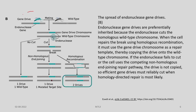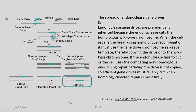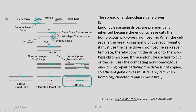Here we have a gene drive population with an endonuclease gene and the wild-type population. The gene drive chromosome and the wild-type chromosome are shown. The endonuclease acts on the wild-type chromosome partner and initiates cuts. As already discussed, it can either undergo homologous recombination or non-homologous end joining. In the case of homologous recombination, the drive is now present in both copies of the chromosome. If no cut is induced, we will have one drive and one wild type. In NHEJ, we have one drive and one mutated target site.